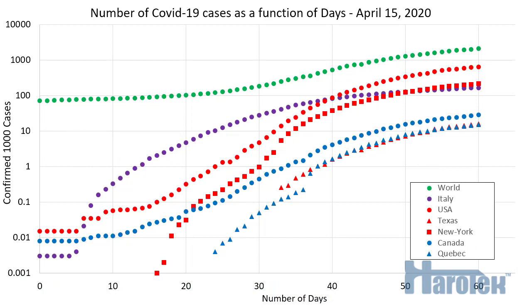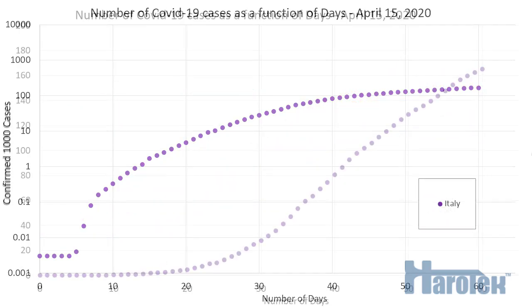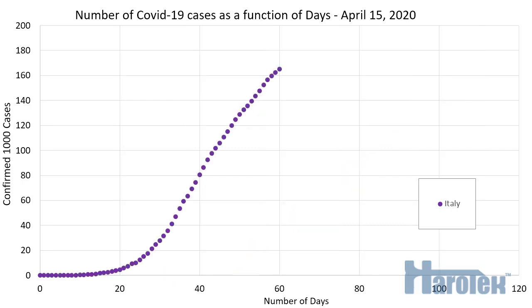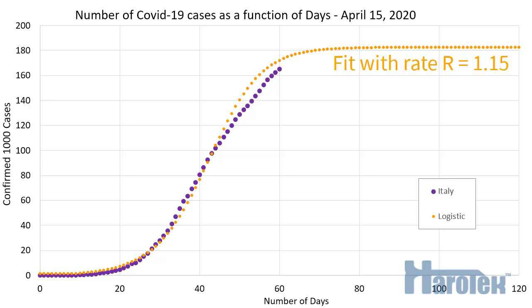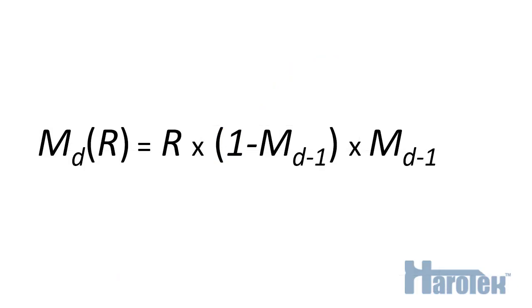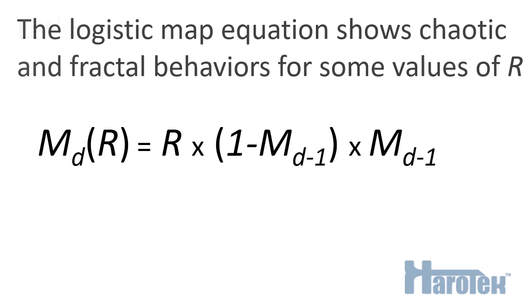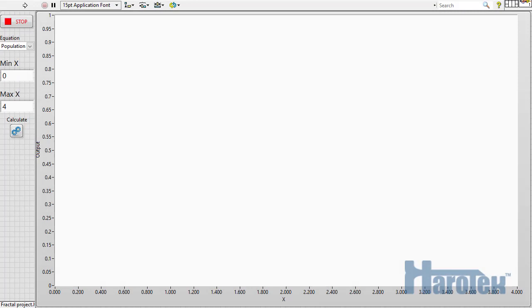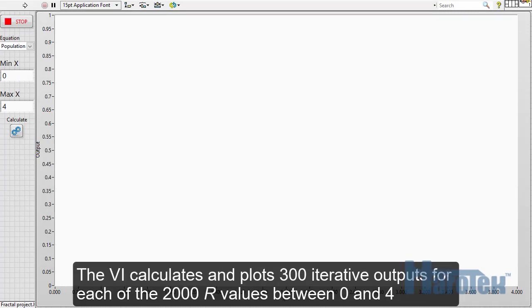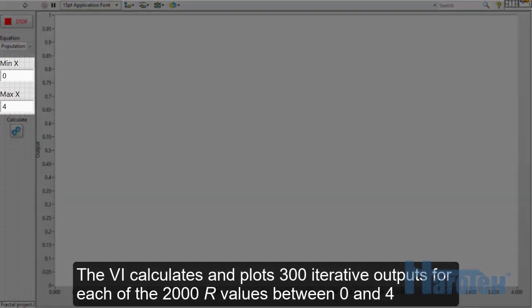I'm using the logistic map equation here to model the propagation of the virus. I keep only the curve for Italy and change the vertical scale to linear, then increase the x-axis length so we can see the flattening predicted by the model. Here is the fit of the logistic map equation to the data using a rate r of 1.15 and a scaling factor. The goal of this equation is not to be a precise predictive model, but to help understand general behavior. One important characteristic is that it shows chaotic and fractal behaviors for some values of r. To illustrate this, I have programmed the logistic map equation in LabVIEW. The VI calculates and plots 300 iterative outputs for each of the 2000 r values between 0 and 4.